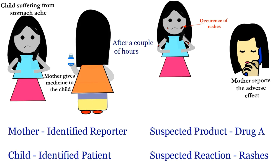It's quite clear after this example. Just to add, the minimum safety information details are also helpful in case of follow-up with the reporter and in avoiding duplications of reports. Now, what if people do not report adverse effects?